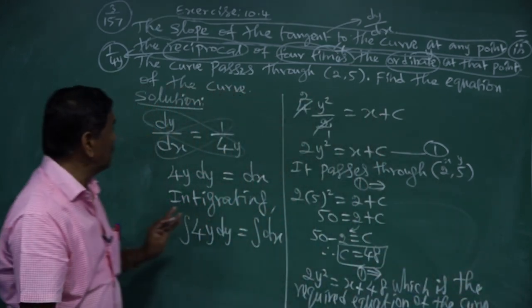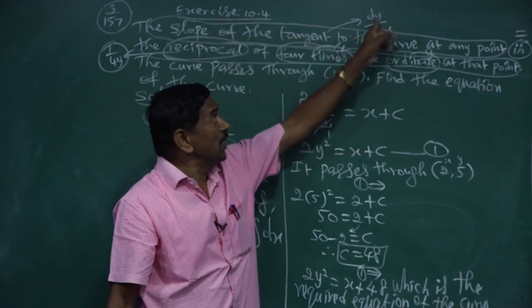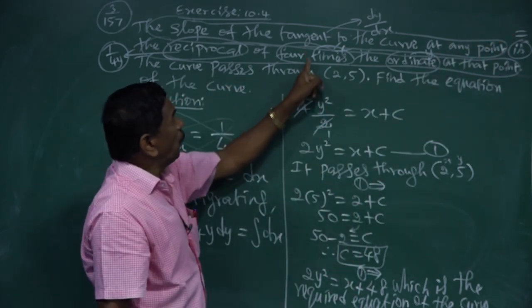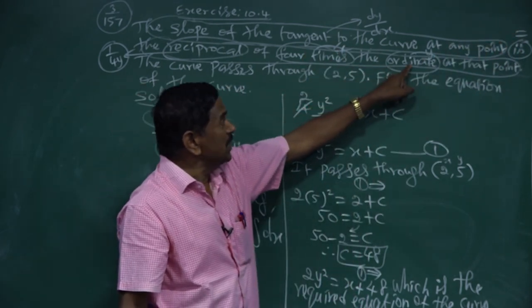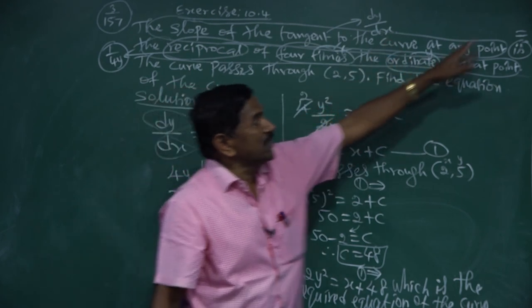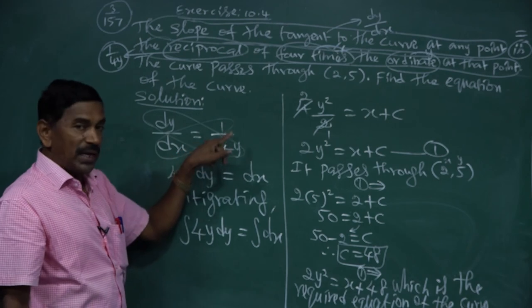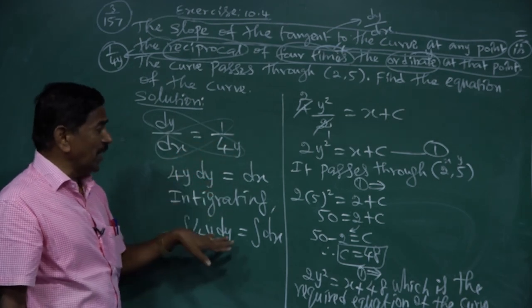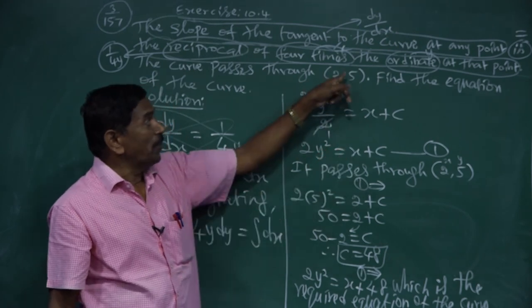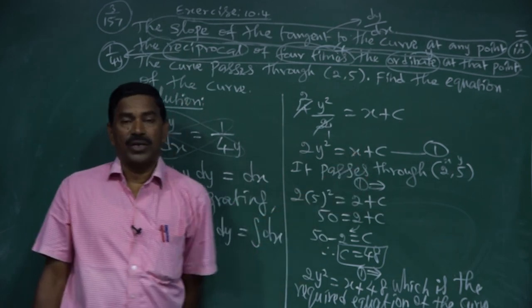To summarize: slope of tangent = dy/dx; reciprocal of 4 times ordinate = 1/(4y). So dy/dx = 1/(4y). By variable separable and cross multiplication, then integrating, we get 2y² = x + C. Using the point (2, 5), we find C = 48. The required equation of the curve is 2y² = x + 48.